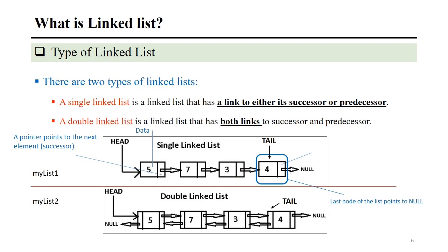Now we will talk about the types of linked lists. There are two types: the single linked list and the double linked list. In a single linked list, it has a link that connects one element to another in one direction — either to its successor or predecessor. In a double linked list, it has links to both the previous and the next elements. As you can see in this picture, my list one represents a single linked list with a head and tail, where each element is connected with only one pointer. My list two is called a double linked list because each element has two directions — it connects to the next element or the previous one.